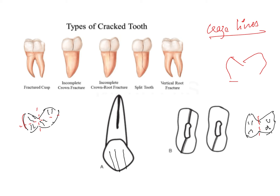In a fractured cusp, only part of the cusp is completely broken out. An incomplete crown fracture involves both the crown and root but has not fully split the tooth. A split tooth is where the tooth has completely split into two parts — a buccal and palatal fragment, or mesial and distal fragment. Treatment involves either hemisection to try to save it, or extraction of one or both parts.